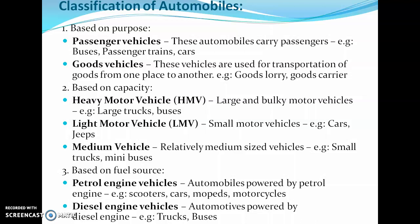The second classification is based on Capacity. Heavy Motor Vehicles are large and bulky motor vehicles such as large trucks and buses. Light Motor Vehicles are small motor vehicles such as cars and jeeps. Medium Vehicles are relatively medium-sized vehicles such as small trucks and mini buses.